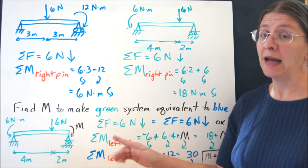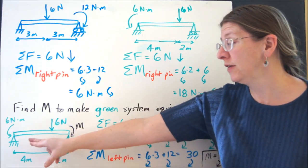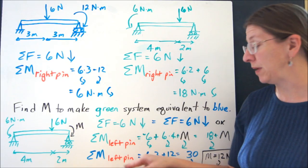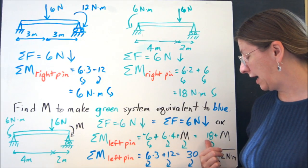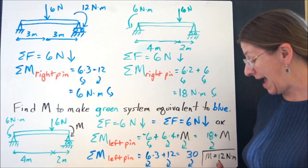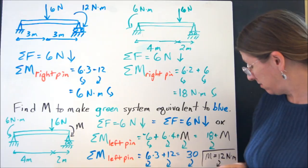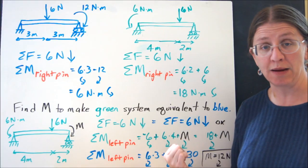Again, I can take any point I want. So I can sum the moments at the left-hand pin for the green beam and the blue beam. And here I get 18 plus M and here I get 30. So I need to add a 12Nm clockwise moment to make them the same.